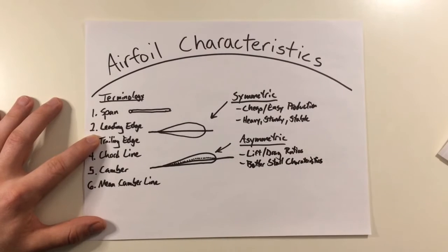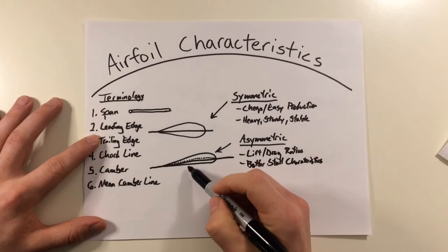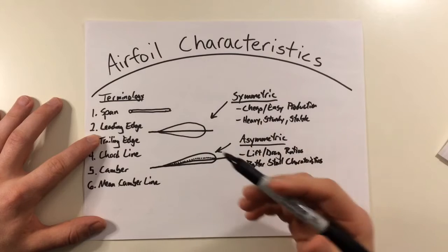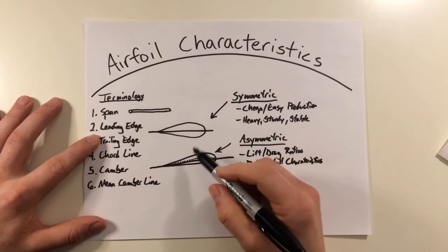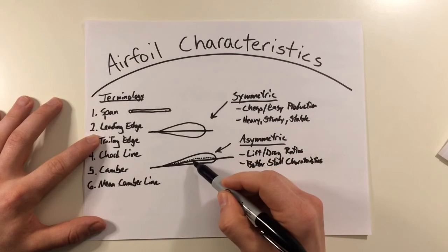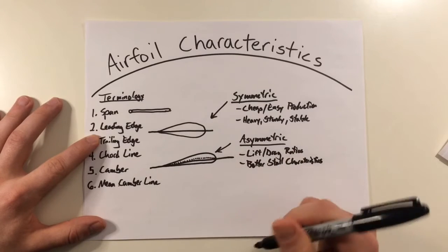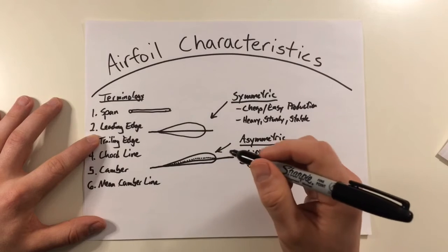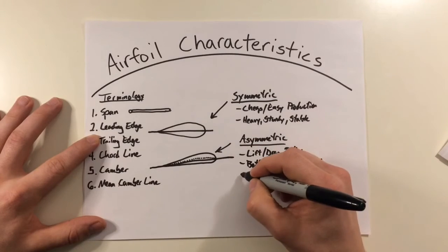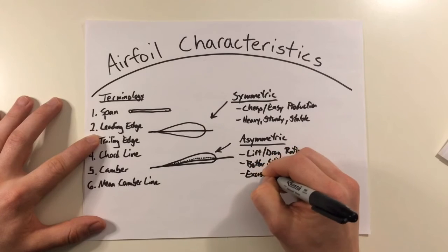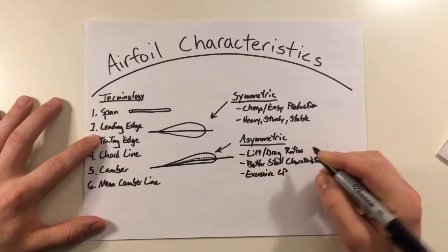However, one downside is that as pressure changes differently around the airfoil, the center of pressure or the concentration of the aerodynamic forces was shifting or shifts up and down the chord line in asymmetric airfoils, which causes blade flapping, leading, and lagging to happen at a greater degree.